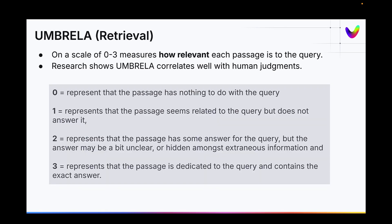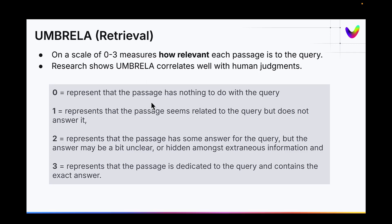Umbrella is a retrieval metric. What it does is take a chunk and give it a score between zero and three — zero meaning the chunk or passage has nothing to do with the query, and three meaning it's dedicated to the query and contains the exact answer. The nice thing about this is not just the scale, but the fact that research done by the University of Waterloo's Jimmy Lin lab shows that this approach correlates well with human judgment, which is really powerful. So even without the golden chunks, you know the results will be good.